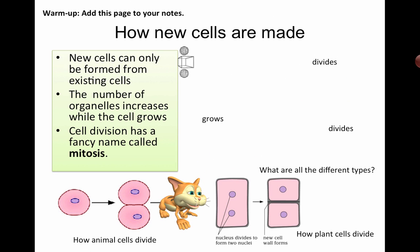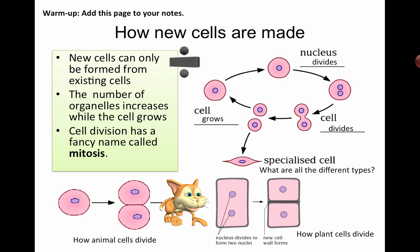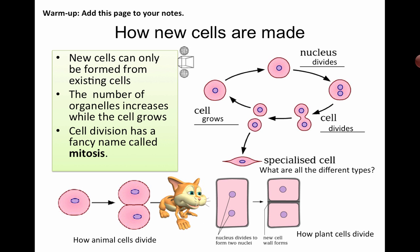Cells divide when you are growing — obviously you have to grow — and they divide when you are repairing various types of cells. So if I cut my hand and get a little cut, eventually that cut disappears because you're actually forming new skin cells. You're not just forming new skin cells when you cut yourself; you're forming new skin cells all the time. So most of that dust you see on the floor, a large proportion of that is actually dead skin cells from you and your family. Something to think about while you're sweeping.